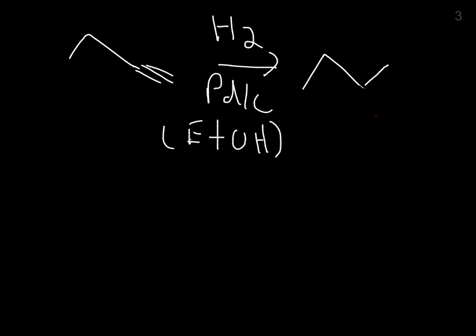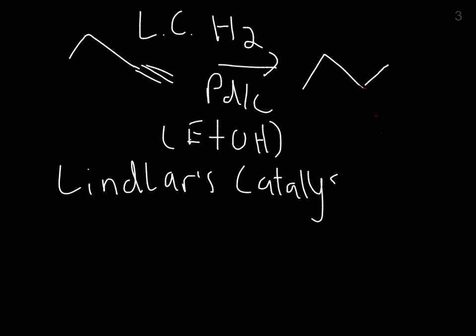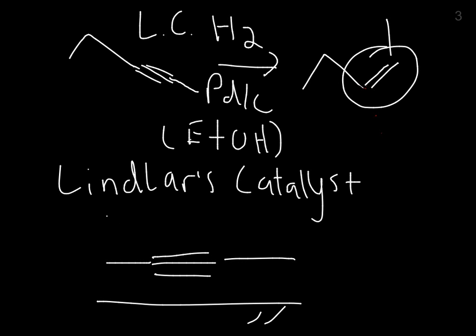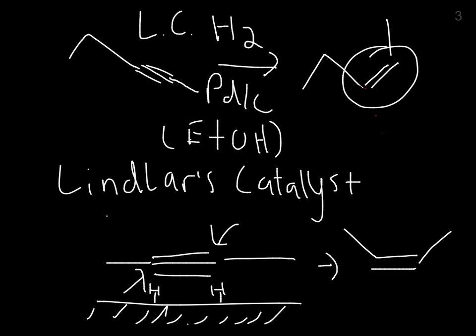You can use what's called a Lindlar's catalyst to turn that alkyne into an alkene. If you have an alkyne that is not terminal, you would end up with a cis alkene. Remember the way it comes in onto the catalyst — there's the palladium — both of the hydrogens are going to be deposited onto the same side. You can't get one on each side. So if they both get deposited on the same side, you're going to end up with an alkene that has to be cis.